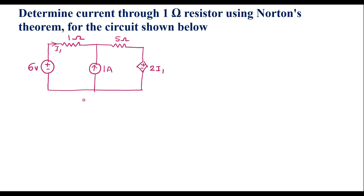In this video, I will consider one numerical on Norton's theorem. Determine current through the 1 ohm resistor using Norton's theorem for the circuit shown below. We are supposed to calculate current through the 1 ohm resistor, that is I1.